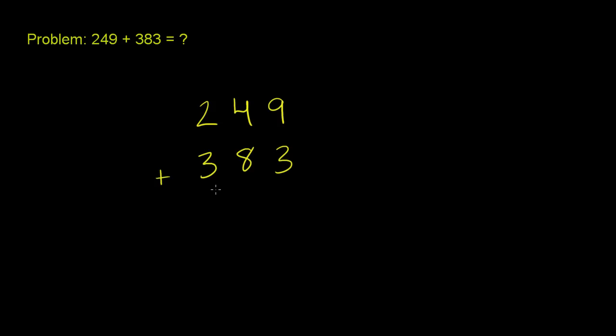And you want to line them up so that we have the same places above and below each other. So the 9 and the 3 are both in the ones place here. So we've lined them up. The 4 and the 8 are both in the tens place, and the 2 and the 3 are both in the hundreds place.